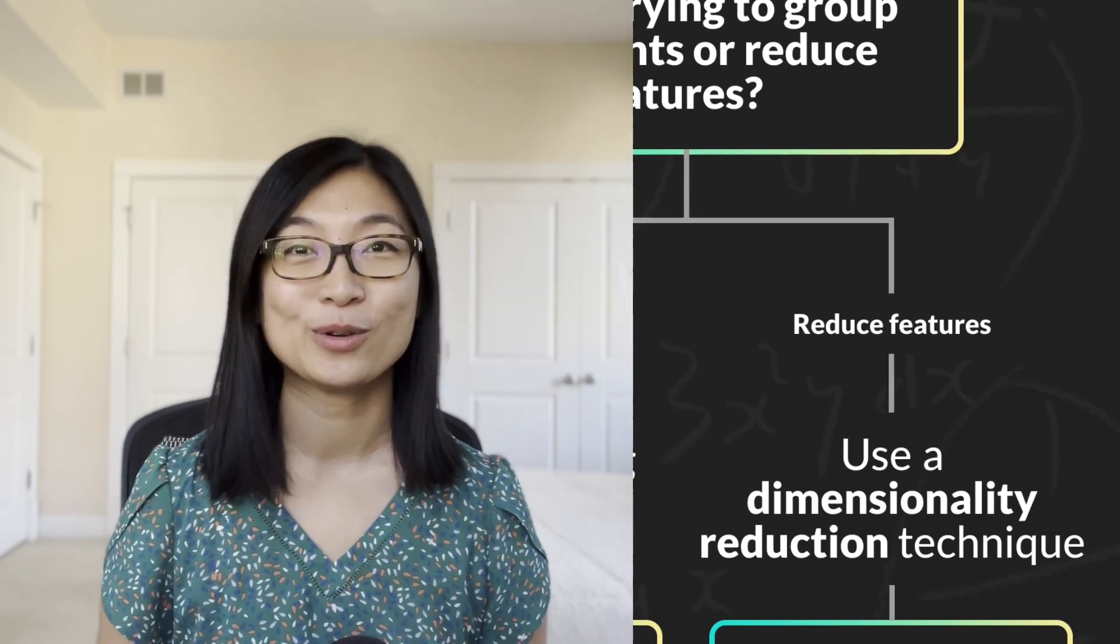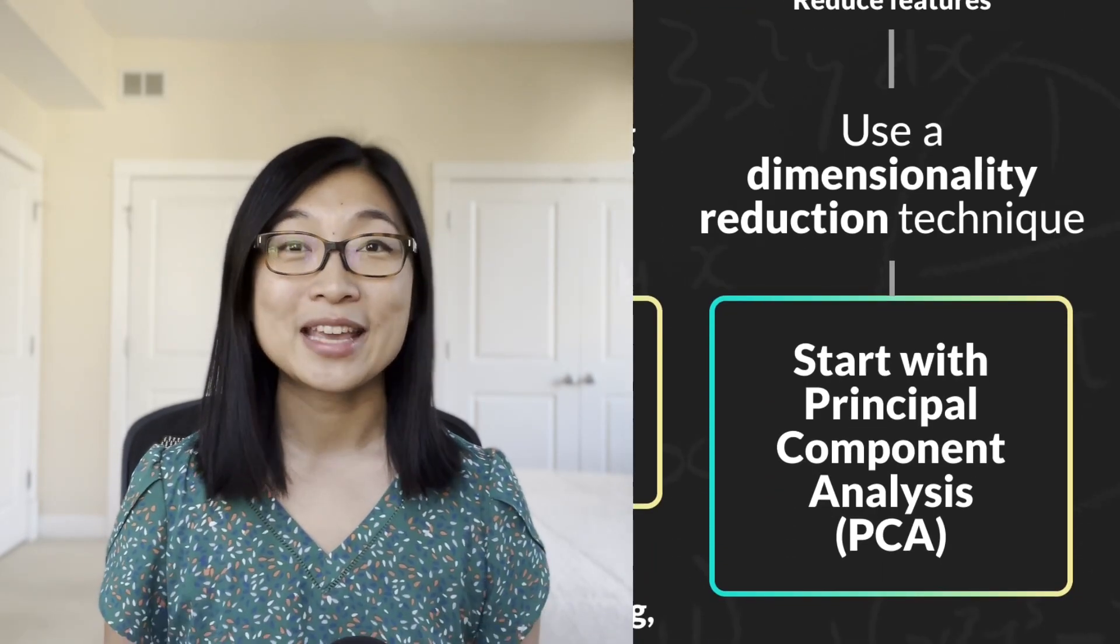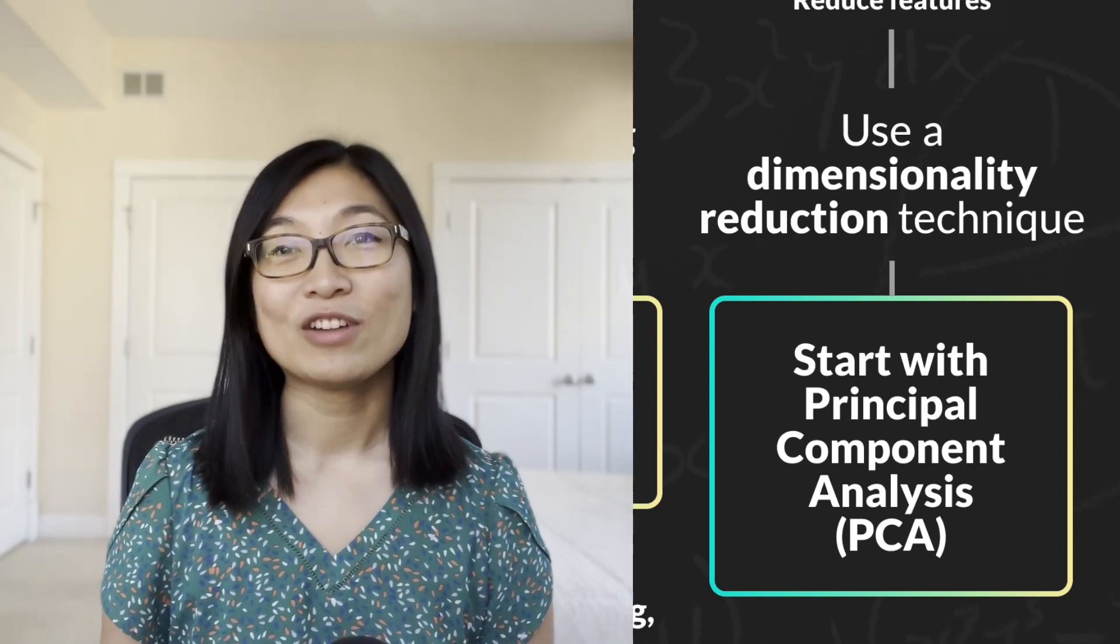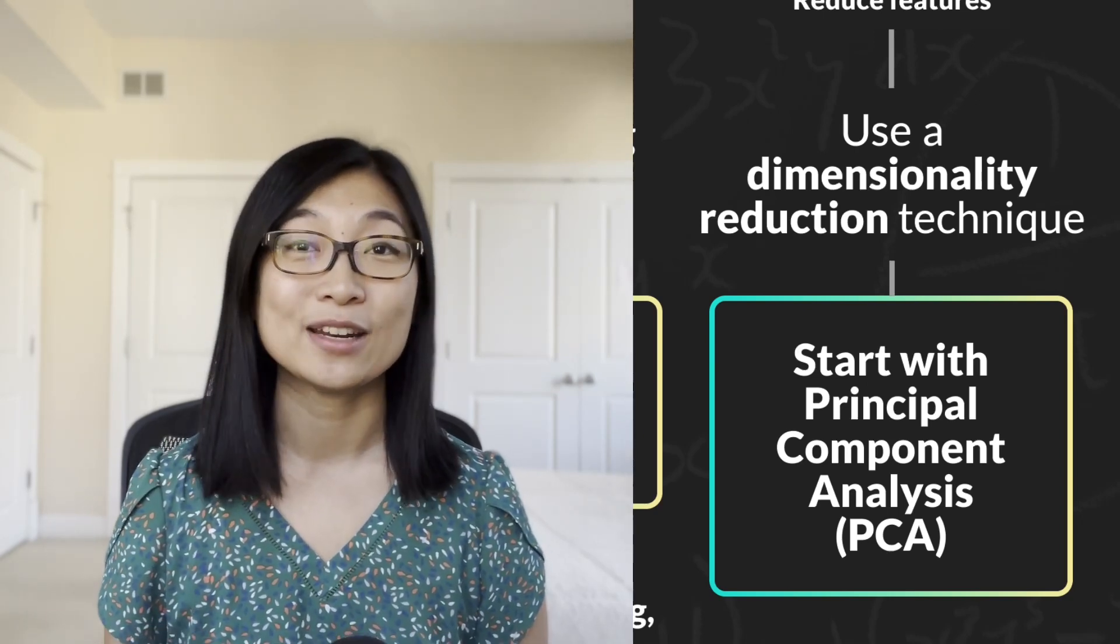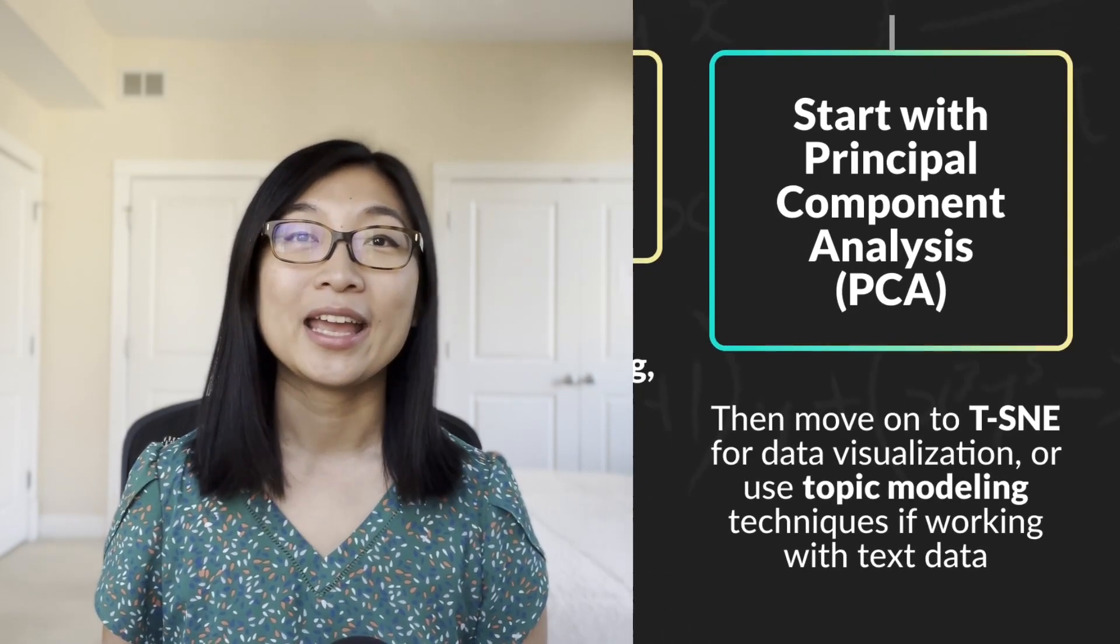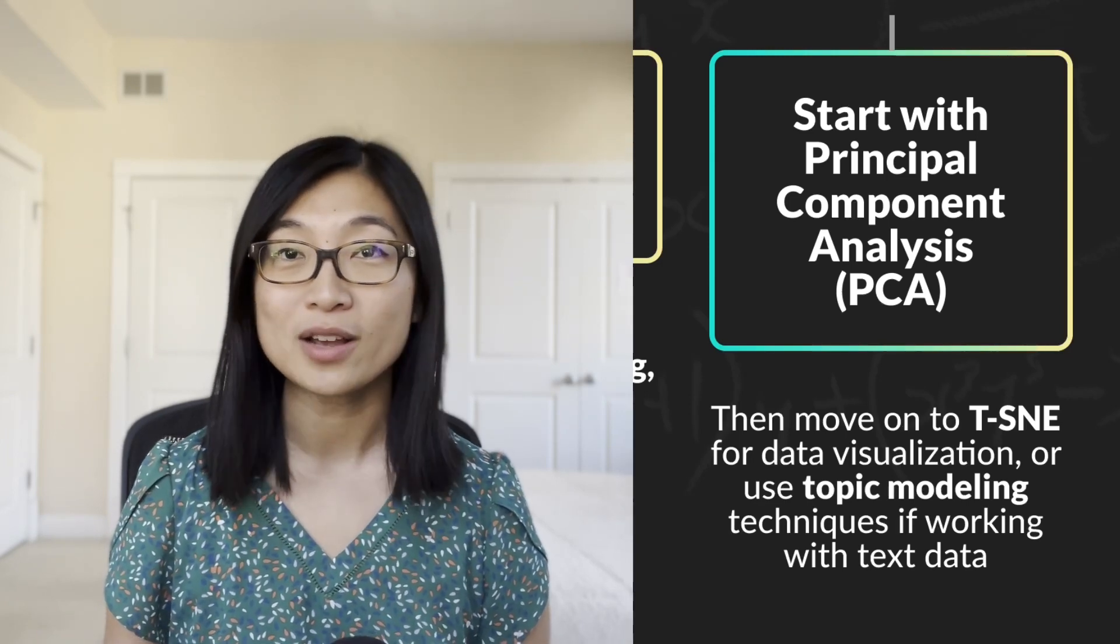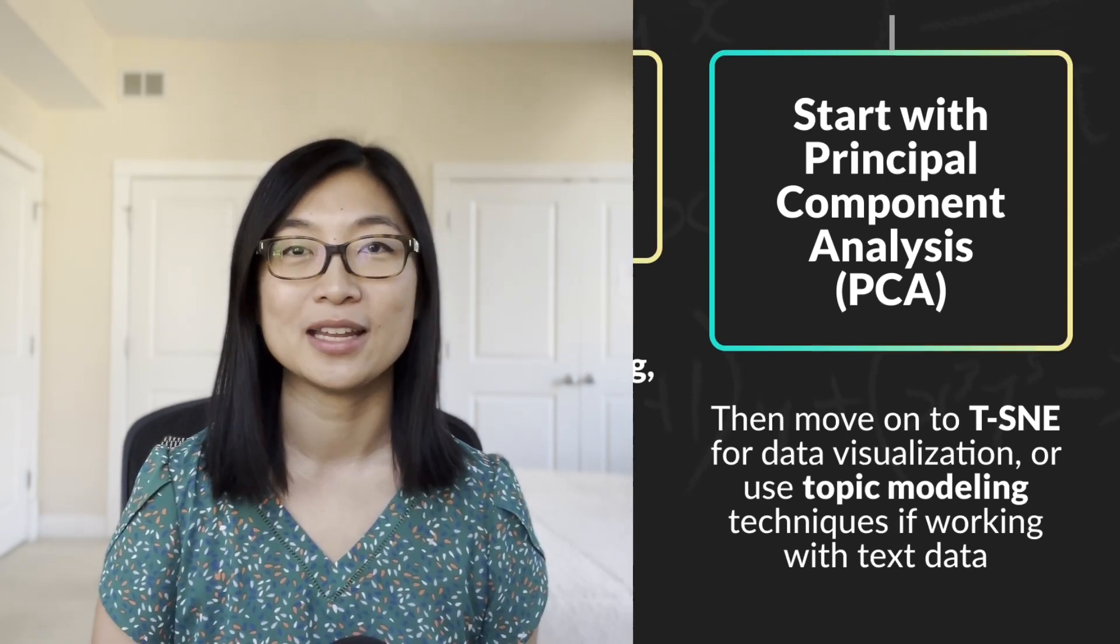So in that case, the most popular dimensionality reduction algorithm is principal component analysis or PCA. PCA is always my go-to. That's what I always start with. And if I'm using dimensionality reduction as a data visualization technique, then the next thing I would try is something called T-SNE. And if I'm using dimensionality reduction for text data or natural language processing, I would actually go with a topic modeling technique.